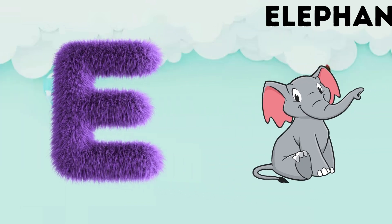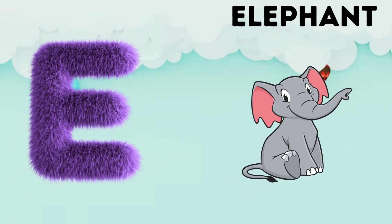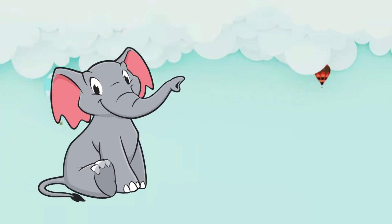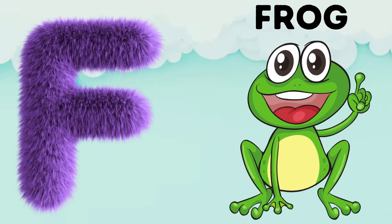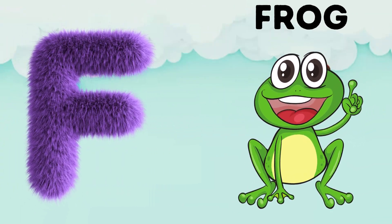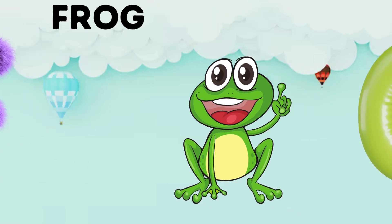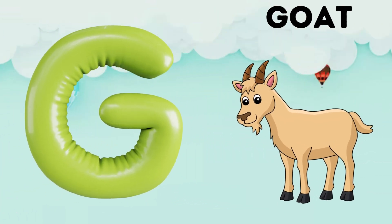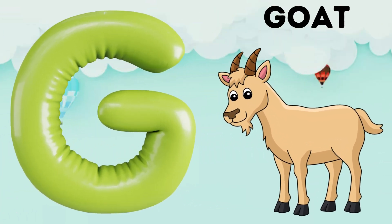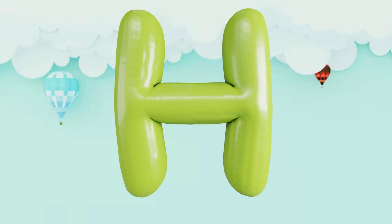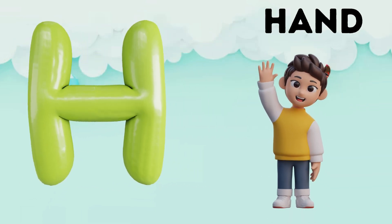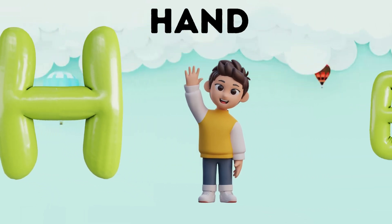E is for elephant, e-e-elephant. F is for frog, f-f-frog. G is for goat, g-g-goat. H is for hand, h-h-hand.